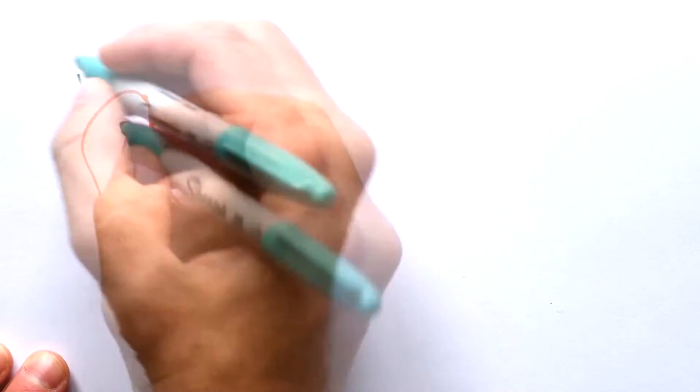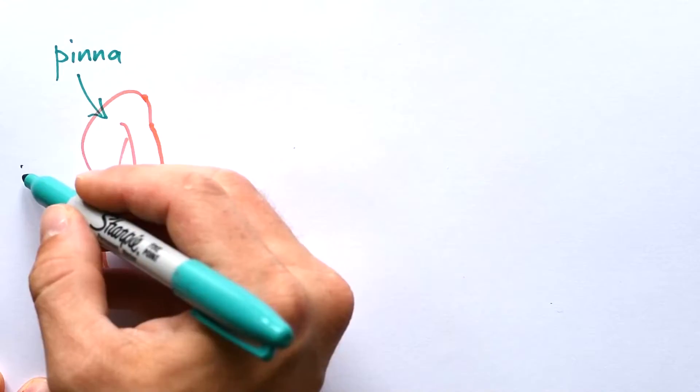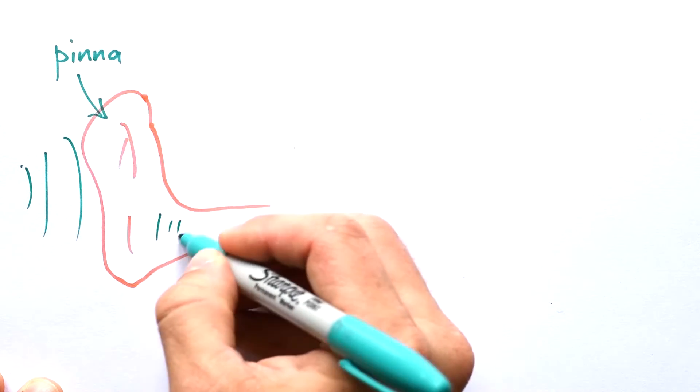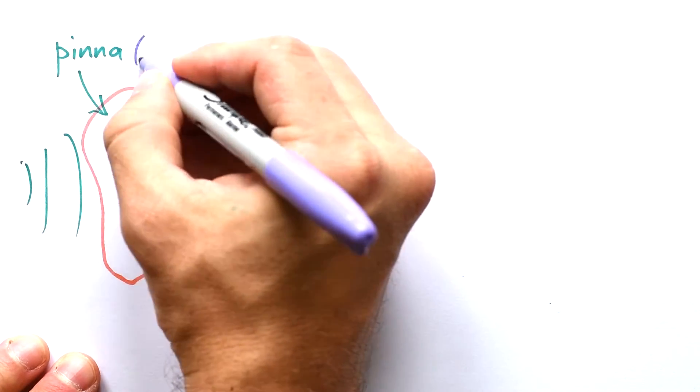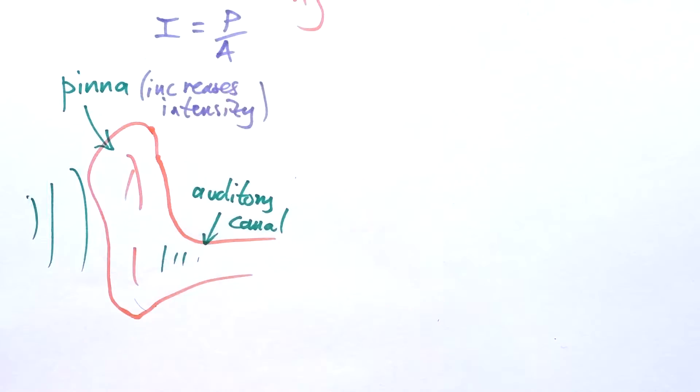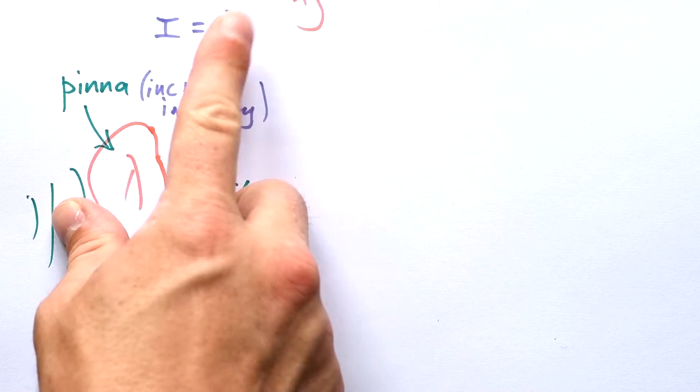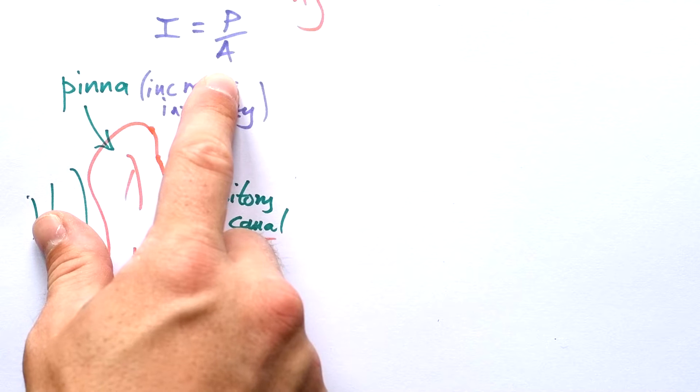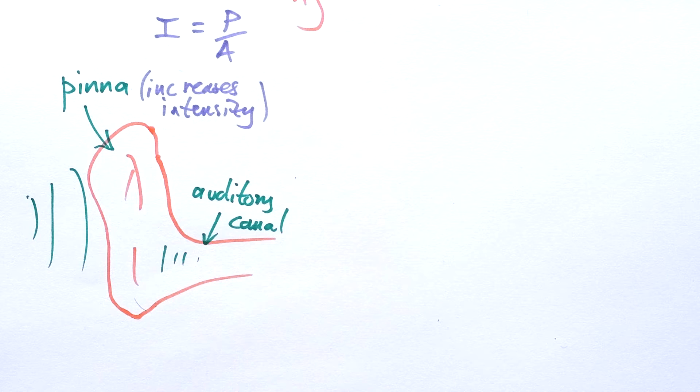But the outside plays a very important role. It's got a proper name, it's called the pinna, and it acts like a funnel for sound waves. It takes sound waves, makes them more concentrated, and sends them down what we call the auditory canal. So the pinna increases intensity of the sound. Intensity is calculated by power divided by area, watts per meter squared. If we're funneling sound down a smaller area, we're dividing by a smaller number, therefore the intensity increases.